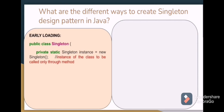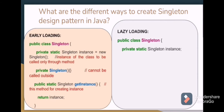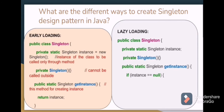What are the different ways to create the singleton design pattern in Java? The two famous ways are early loading and lazy loading. In early loading, we have a Singleton class where the instance is created at the class level itself, along with a private constructor and a getInstance() method to return the instance. In lazy loading, we declare the field but don't create the instance immediately. The private constructor is the same, and in getInstance() we first check if the instance is null — if it is not already created, only then is the instance created and returned.